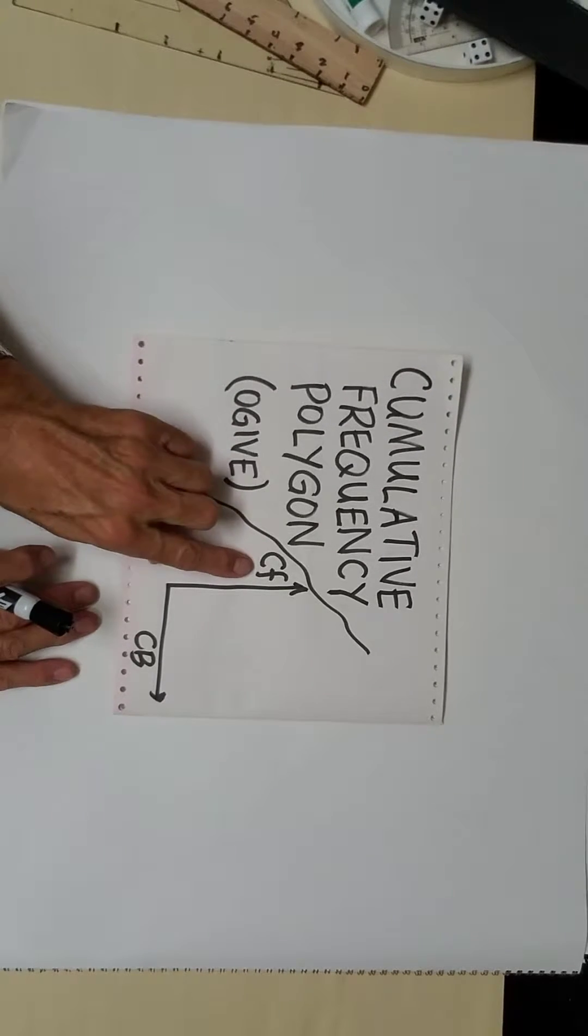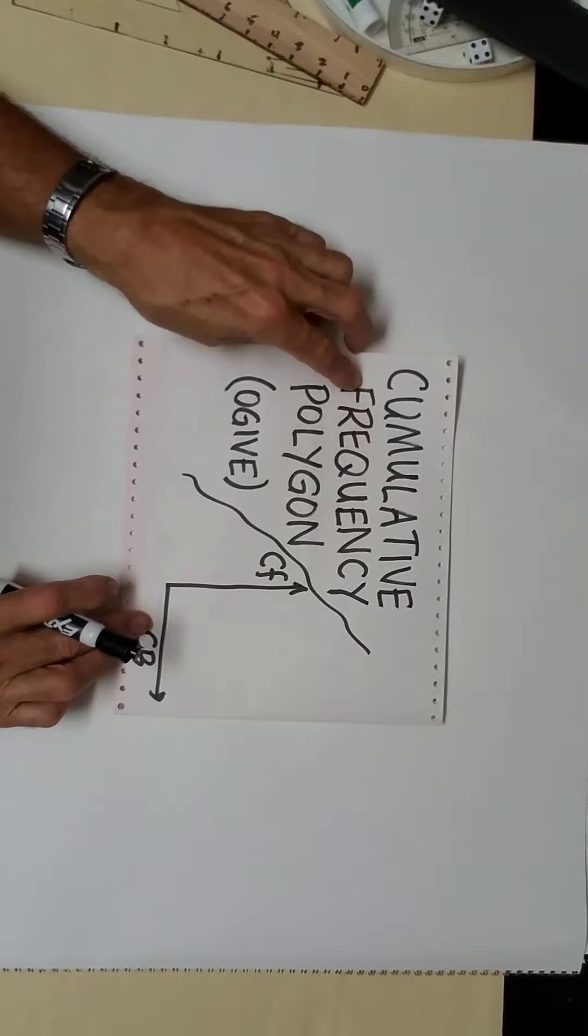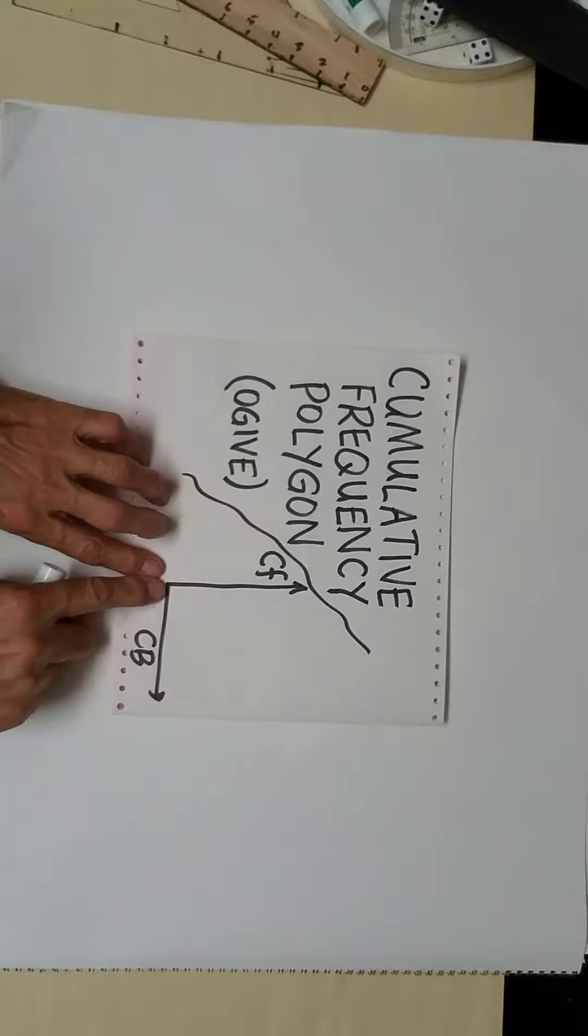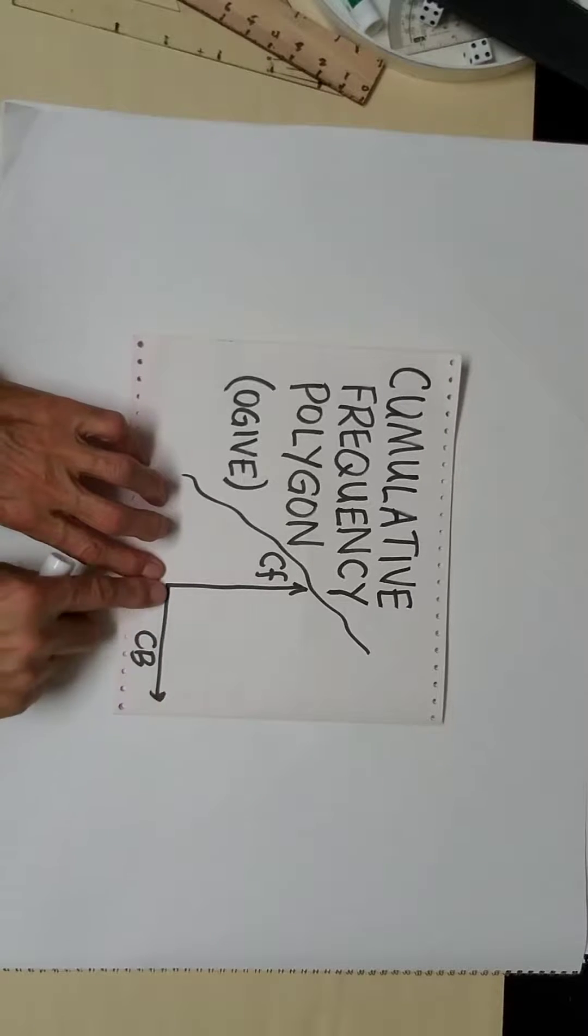This graph uses cumulative frequency on the vertical scale, and it uses class boundaries on the lower scale.